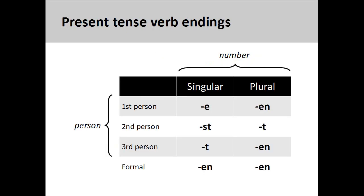In German, present tense verb endings are determined both by the number of the subject they modify, singular or plural, and the person of the subject, first, second, or third person. There are also singular and plural endings for the formal form of address.